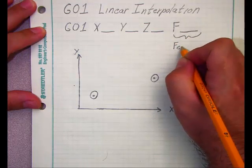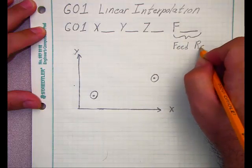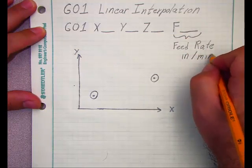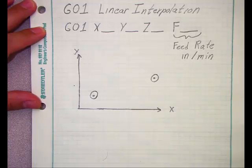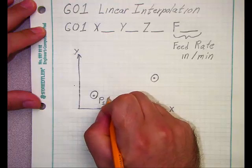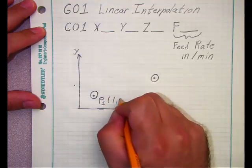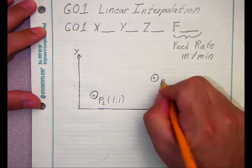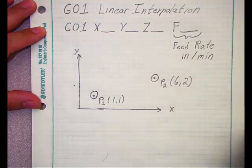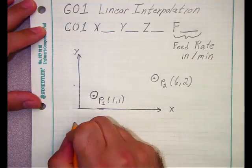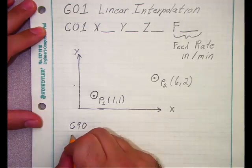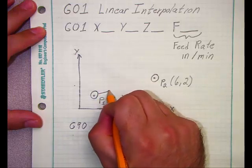And the feed rate is how fast the end mill will move in the material. And feed rates are often given in units of inches per minute. The feed rates depend on how hard the material is and how strong or robust our machine is. So let's go to an example. Let's take P1 and put it at 1 comma 1, and let's take P2 and put that at 6 comma 2. And again, to use the G01 code we're going to have to know whether we're in incremental or absolute coordinates.